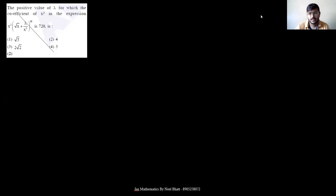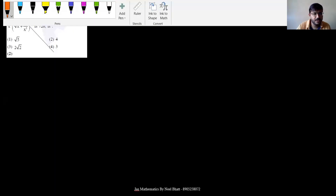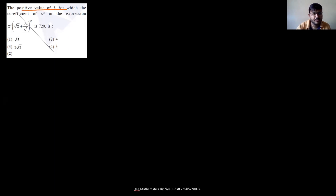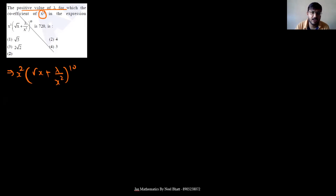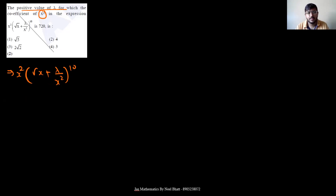The second question is based on binomial theorem: find the positive value of λ for which the coefficient of x² in the expansion x²·(√x + λ/x²)^10 is 720. We don't need to multiply x² inside the bracket. Instead, find the constant term of the bracket, since multiplying by x² gives us the coefficient of x² directly.